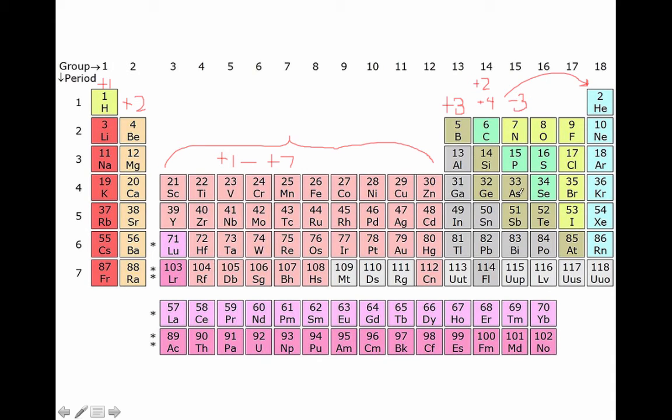Nitrogen and those family members, phosphorus, arsenic, they're going to form a negative three anion.